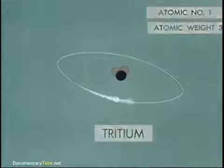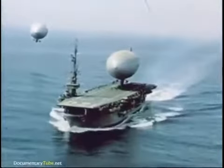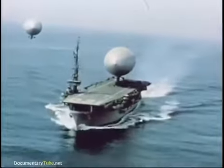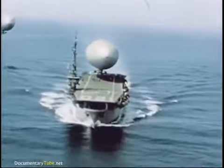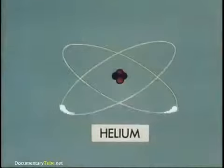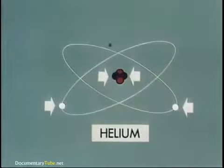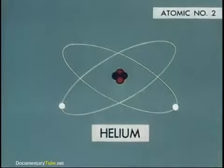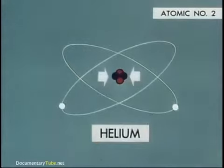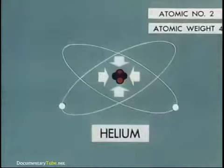One rung above hydrogen on the ladder of elements is helium. One of the uses for helium you're probably familiar with is in lighter-than-air aircraft. A helium atom has two electrons and a nucleus composed of two protons plus two neutrons. So helium has the atomic number two, same as the protons which it possesses, and an atomic weight of four, its protons plus neutrons.